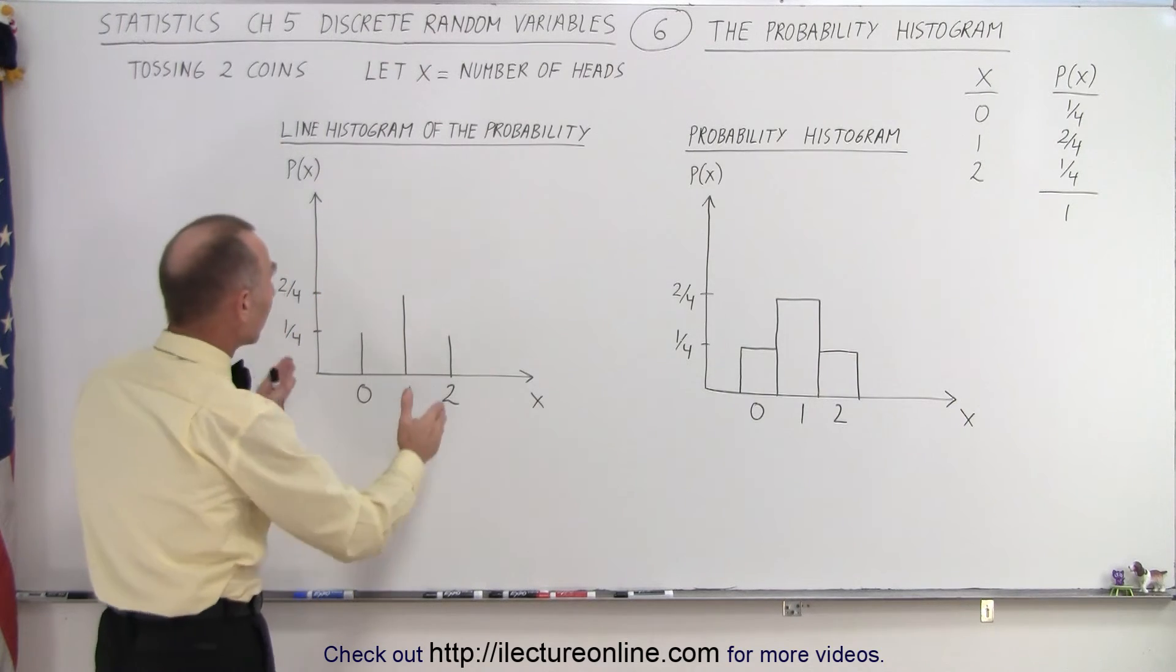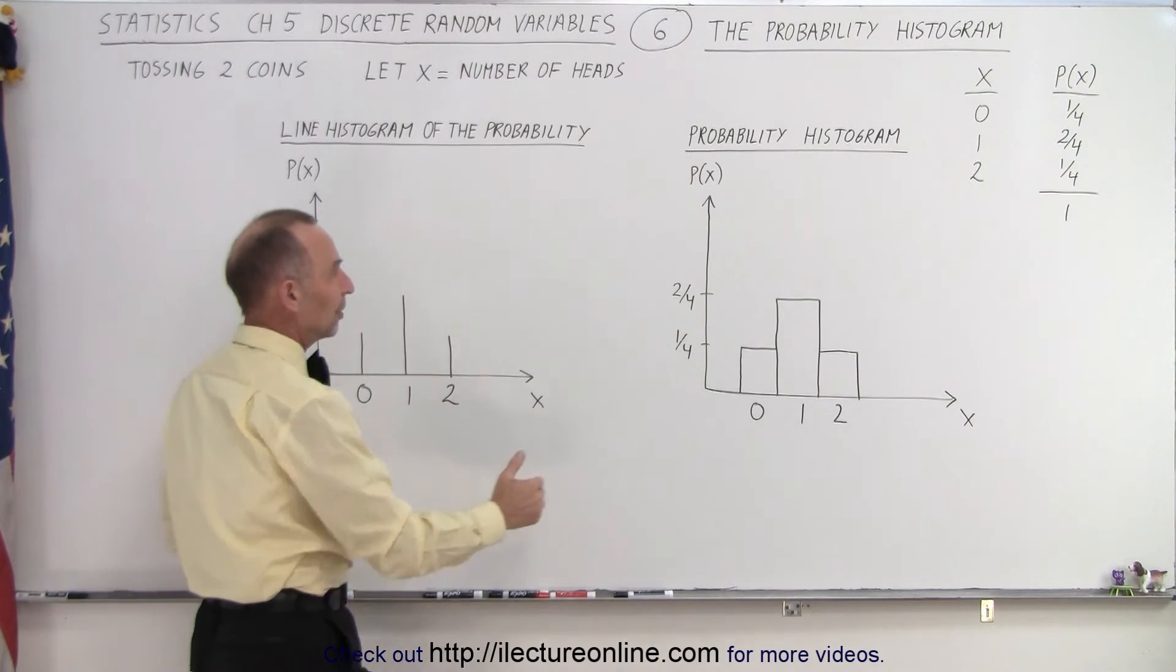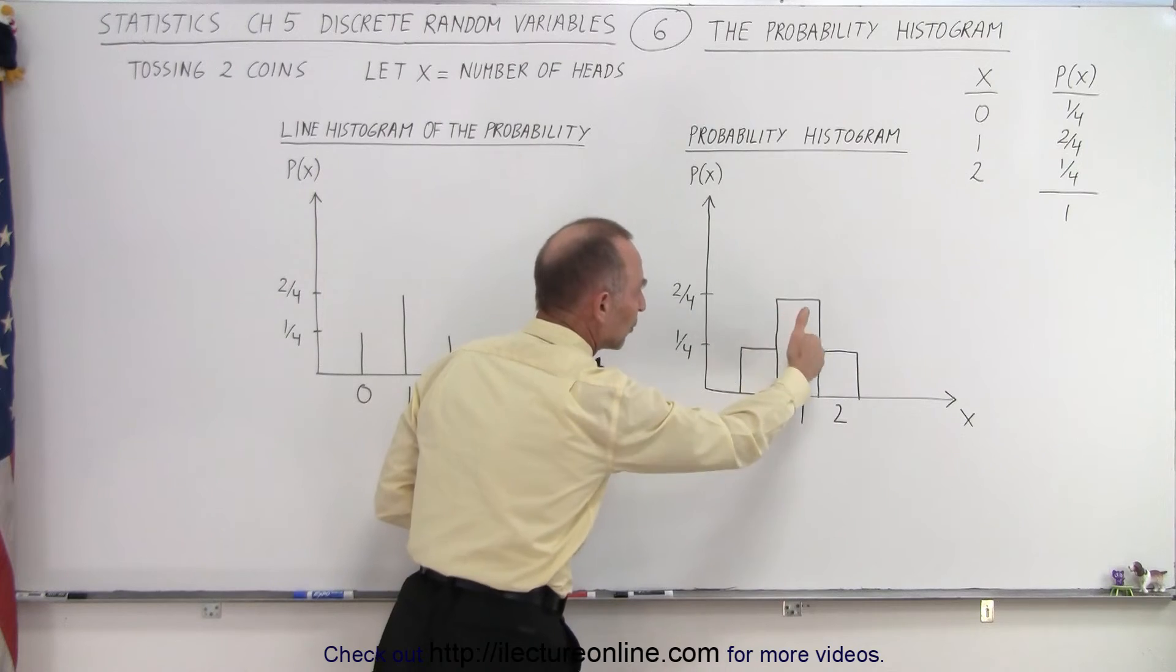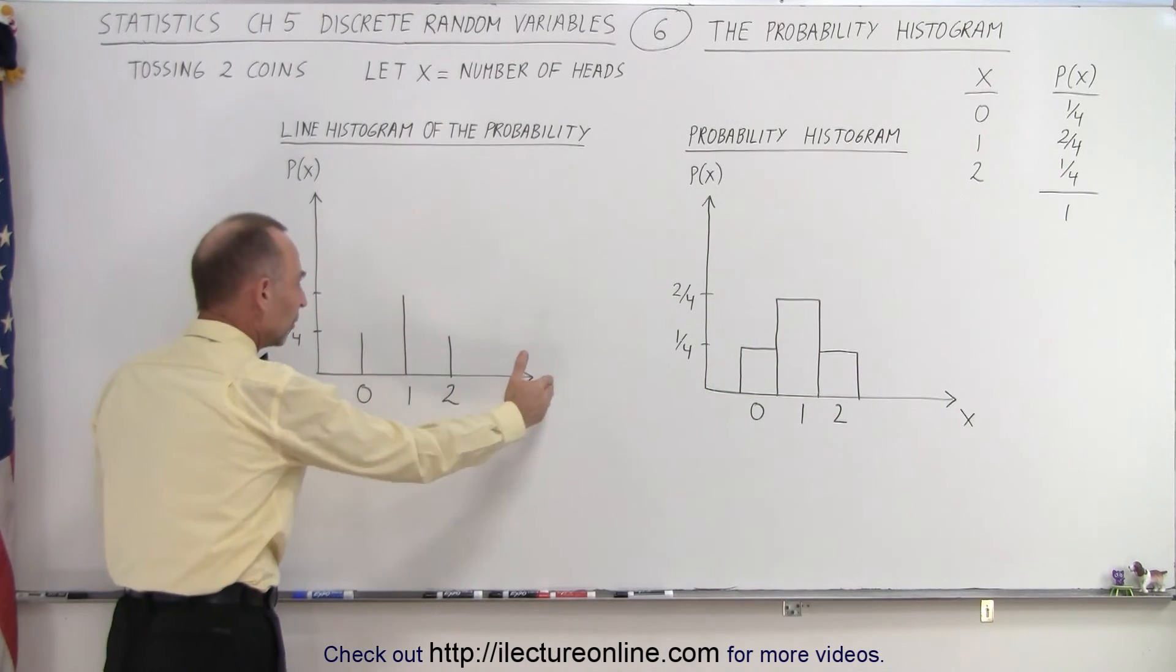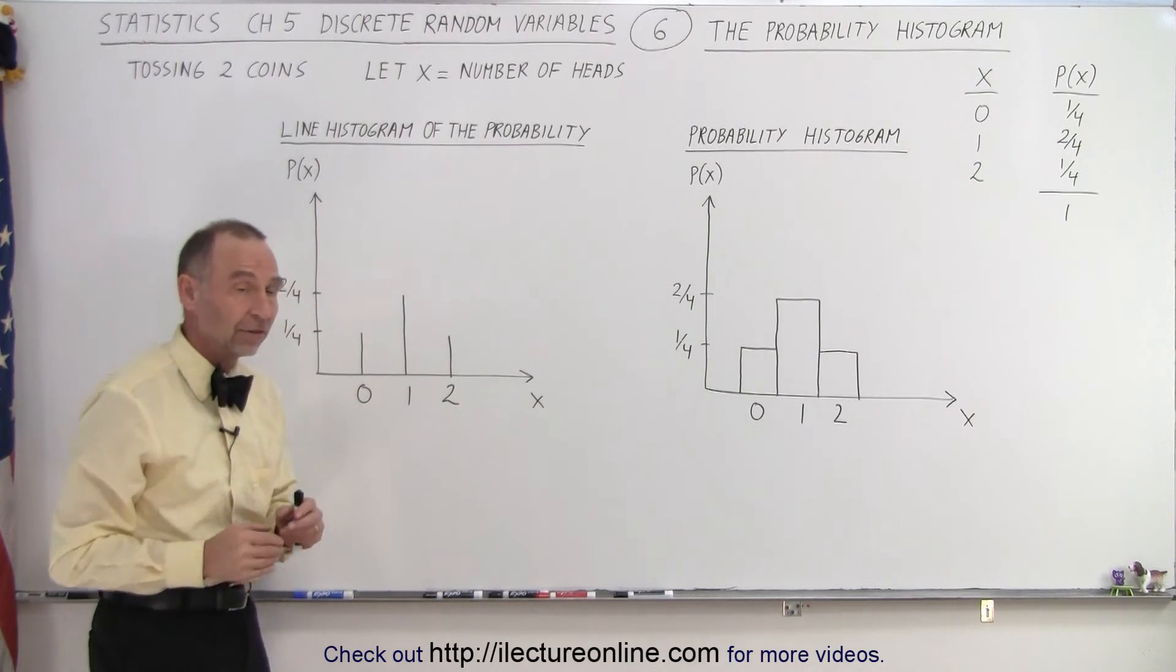The advantage of using a line histogram versus the more common histogram where we use blocks is when there are a lot of variables or possibilities along the horizontal axis.